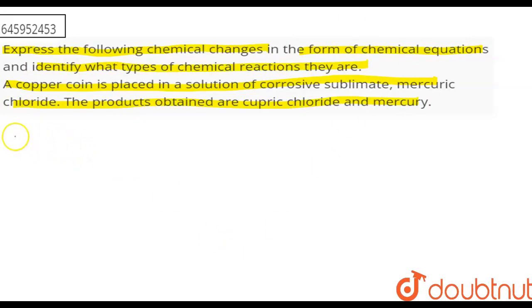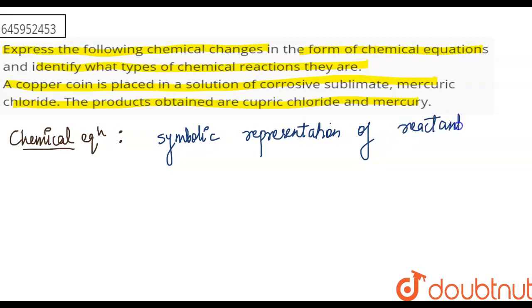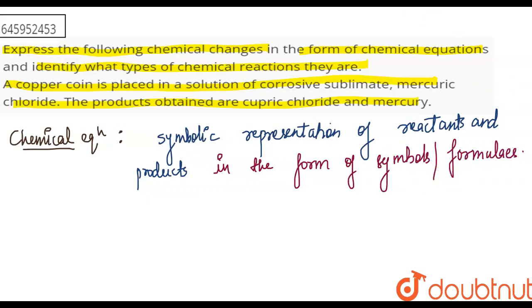Let's see. We will understand what a chemical equation is. So, the chemical equation is basically a symbolic representation. This is your symbolic representation of reactants and products in the form of symbols and chemical formulas.